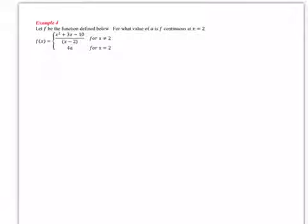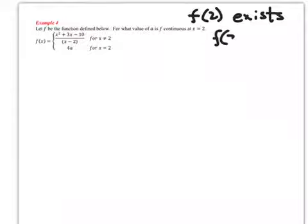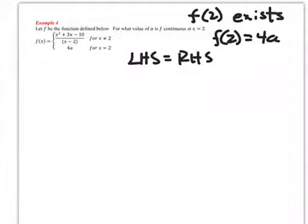Okay, this last example is very similar to the first example. Basically, like we had in the first example, we've got to assume that f of 2 exists. And in this case, it looks like f of 2 will equal 4 times whatever a ends up being. We want our left-hand side to equal our right-hand side when x equals 2.